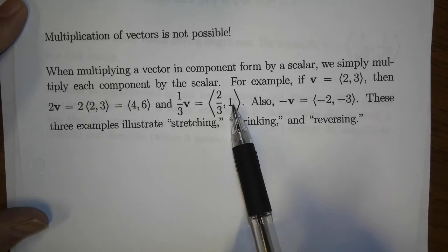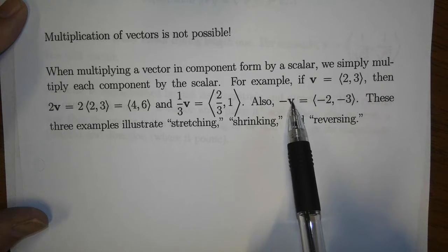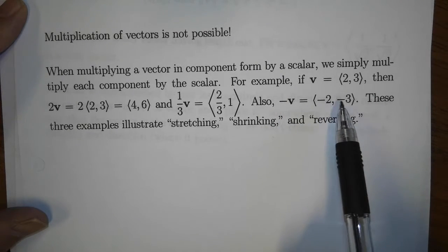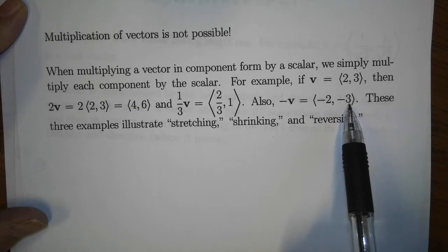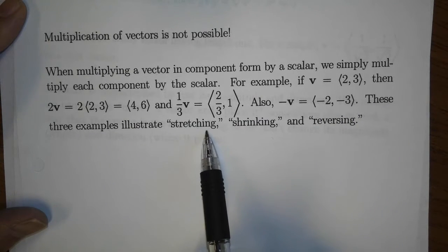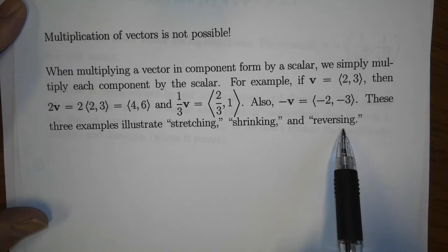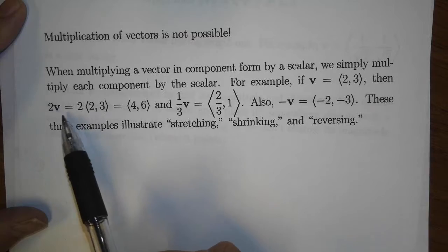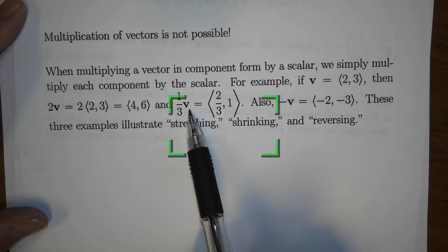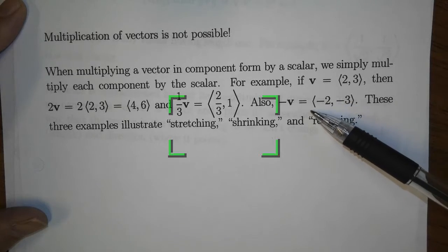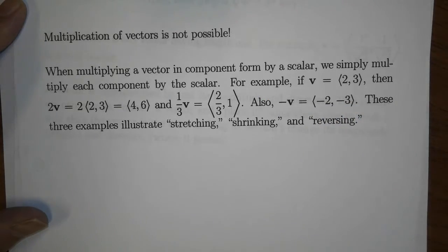Multiplying the vector v by negative 1 gives ⟨-2, -3⟩, multiplying each component by negative 1. These three examples illustrate stretching, shrinking, and reversing. Multiplying by 2 stretches the vector; multiplying by 1/3 shrinks it; and multiplying by negative 1 reverses its direction.